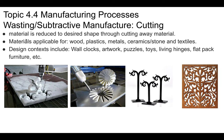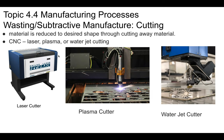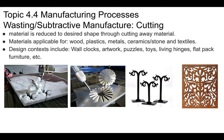Water jet cutters can cut through stone and aluminum. Laser cutters cut through plastic and wood. These CNC cutters are ideal for anything you're working on in two dimensions. Materials that can be cut include wood, plastics, metal, ceramics, stone, and tile. Design contexts include wall clocks, artwork, puzzles, toys, and flat-pack furniture like IKEA products.